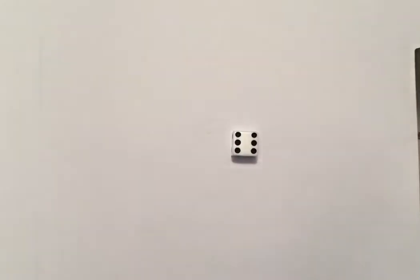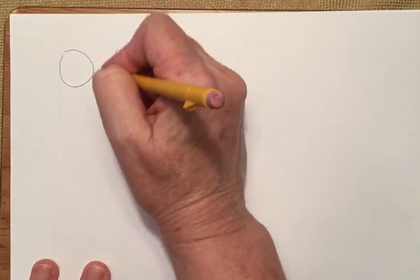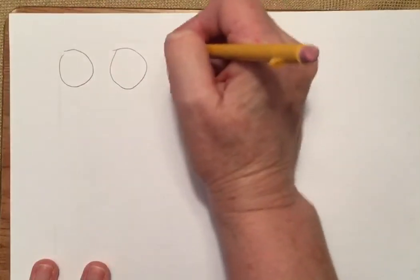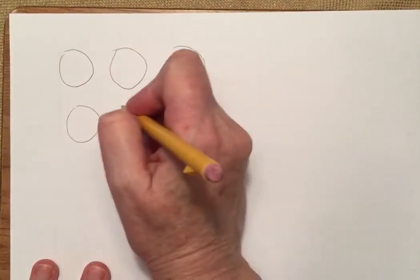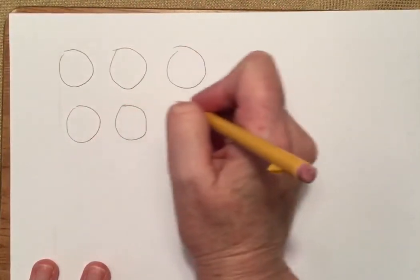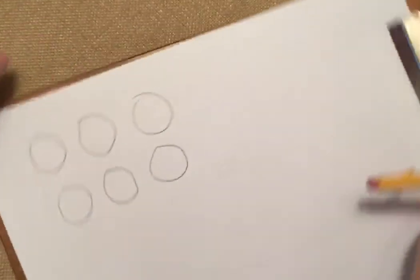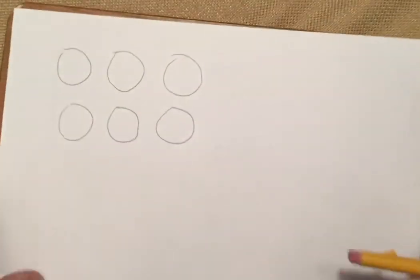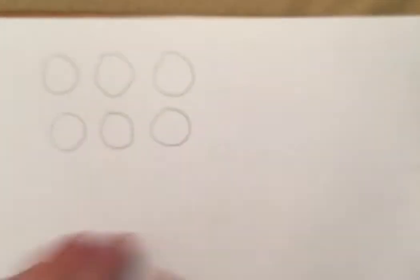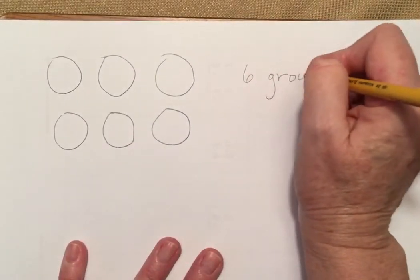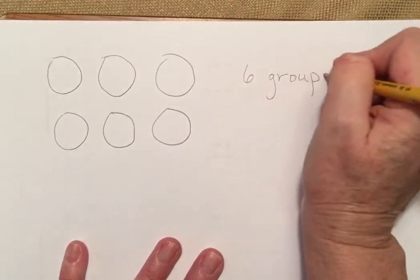Let's say we have six circles — six groups. Remember, I'm going to arrange my groups just like you would see on a die: three and three, right? Three and three. Alright, so that's six groups, and you need to write six groups.